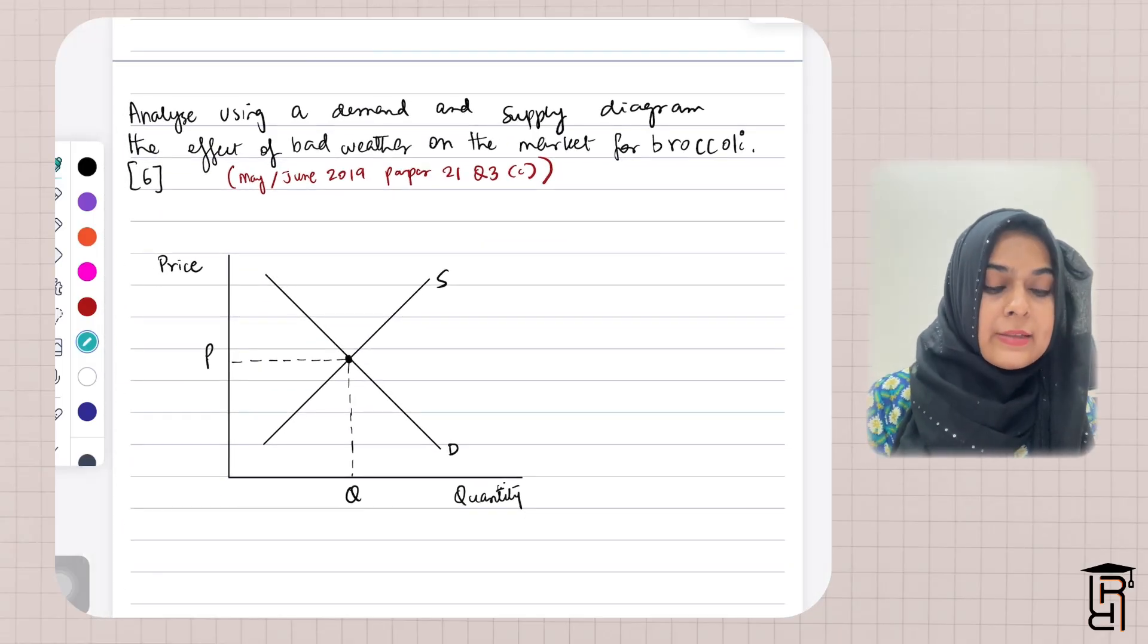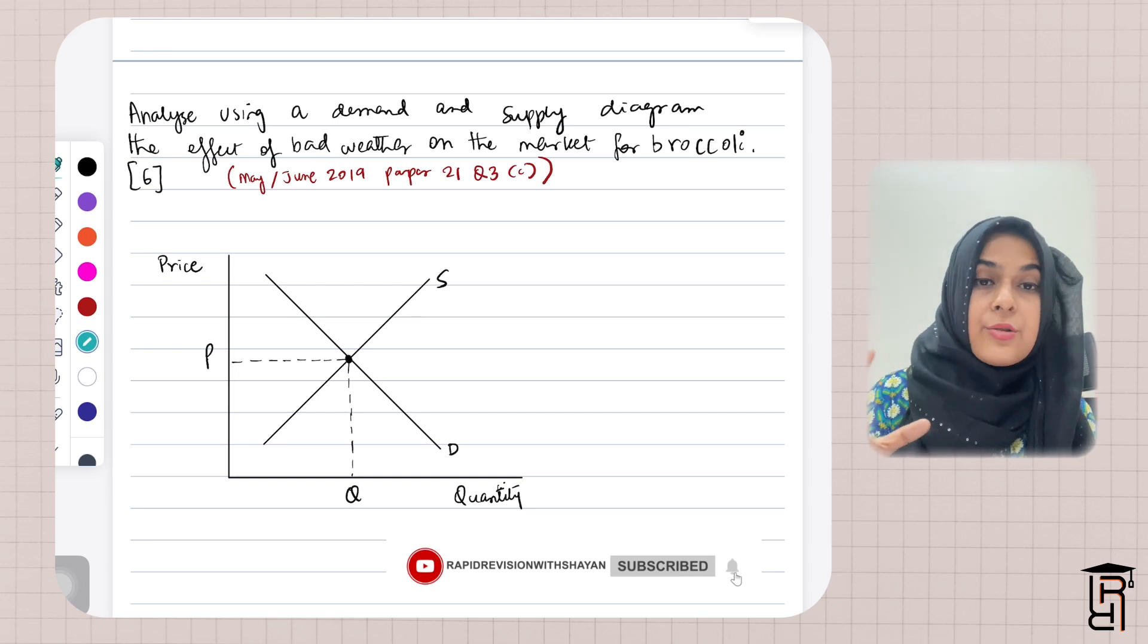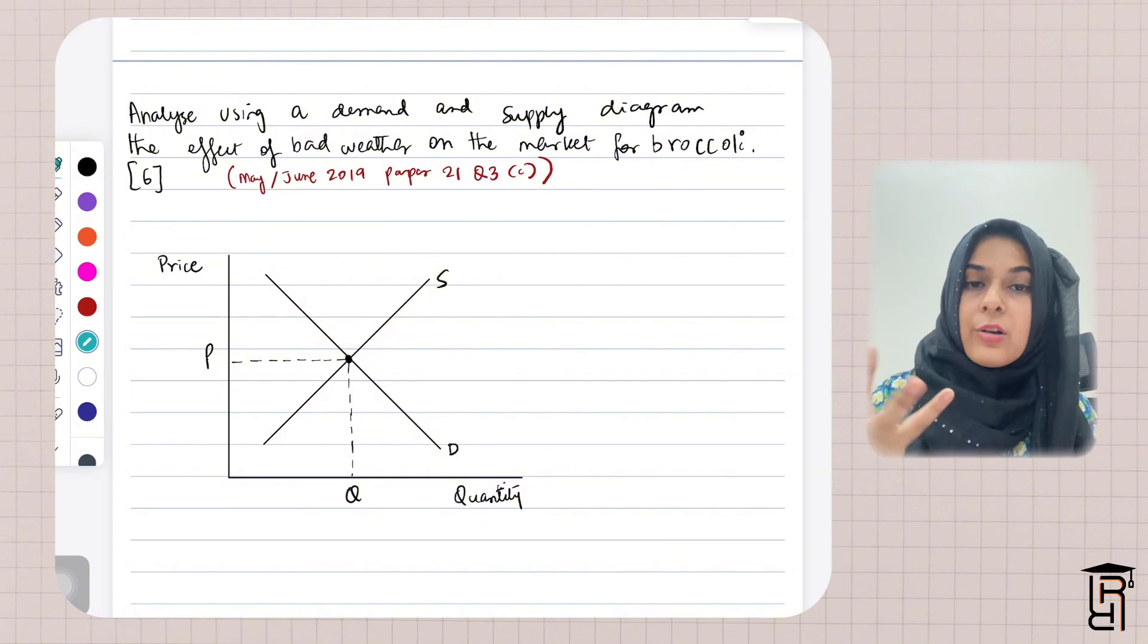Assalamu alaikum everybody. So if you guys see this question: analyze using a demand and supply diagram the effect of bad weather on the market for broccoli. What will happen is that bad weather is going to reduce the crops that are grown, the crops for broccoli.